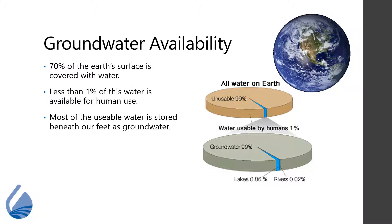Even though water covers 70% of the Earth's surface, less than 1% of it is available for human use. More than 42 million people in the United States use individual or private wells to supply water for their families. It plays crucial roles in agricultural and industrial processes.